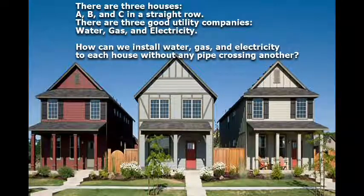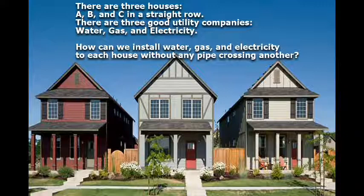There are three houses — A, B, and C — in a straight row. There are three utility companies: Water, Gas, and Electricity.